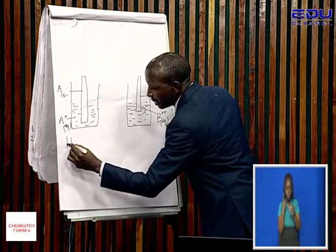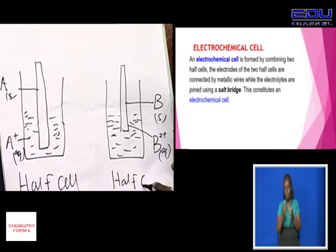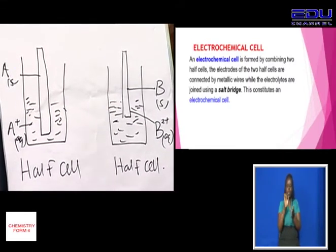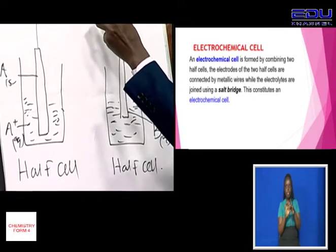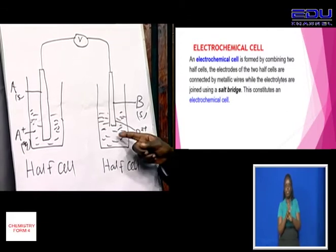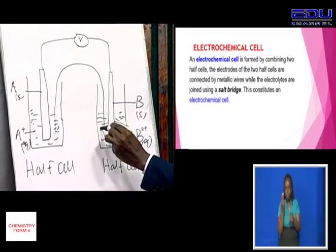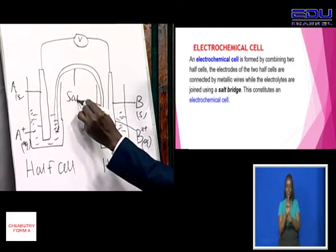Now we have half cell one, and we have another half cell. An electrochemical cell is made by two half cells whereby the metal rods are connected to each other using a wire, and the solutions of the two metal ions in the half cells are also linked using a salt bridge.